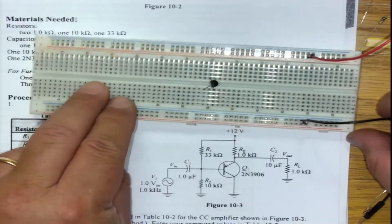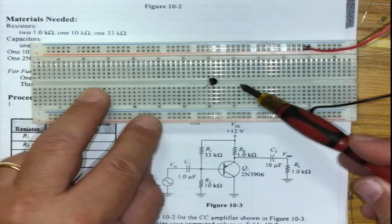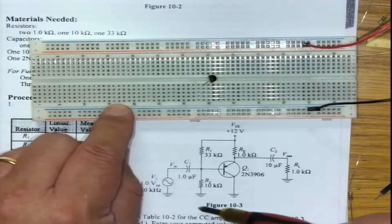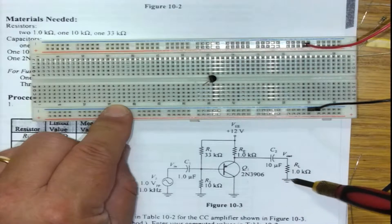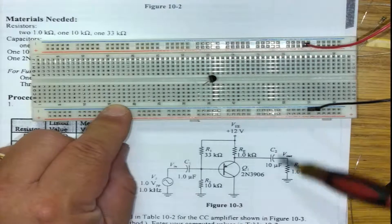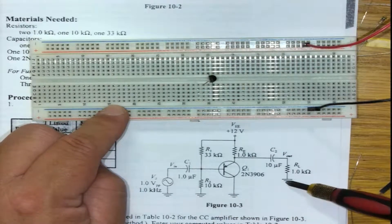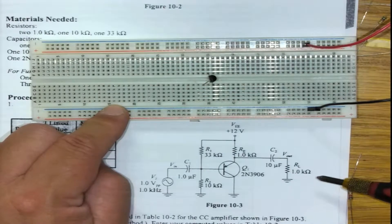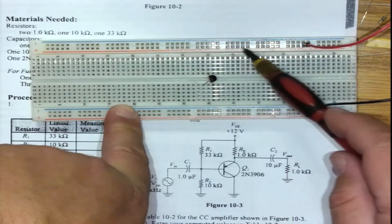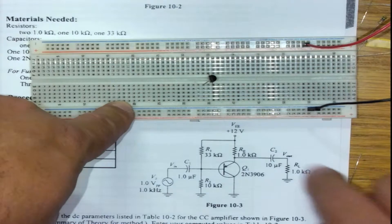There's the circuit and there's the breadboard. Plus needs to go there. Ground symbols on a schematic imply they are all connected together to the same place. In our case, we use the blue line on the breadboard for ground and the red line on top for our plus or VEE, which is 12 volts.